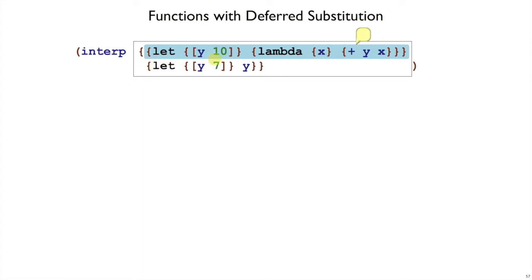So this function, the part in blue, should return this function that takes an argument x and adds 10 to x. Meanwhile, the argument is going to be 7, because that's what let y be 7 in y is, and so we're going to pass a 7 in, and we should get 17 out in the end. But how does the interpreter get there?